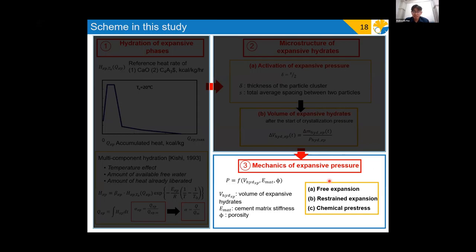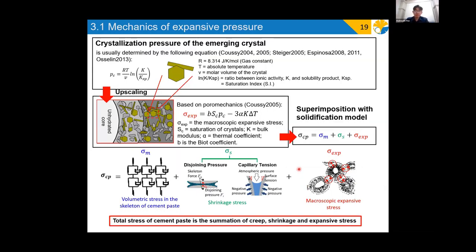After we obtain the microstructure of expansive hydrates, the effective expansive hydrates would be used for the calculation of expansive pressure. From thermodynamic point of view, the local crystallization pressure, Pc, could be computed from the following equation. Then, Coussy showed that the local crystallization stress could be related to the macroscopic stress through the relation as shown here. After obtaining the macroscopic stress, the total stress in the cement paste is considered through superimposition with the creep and shrinkage stress from our currently available solidification model. Thus, the interaction between the shrinkage and expansion is coupled together.